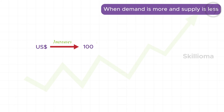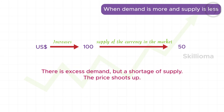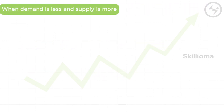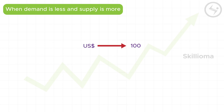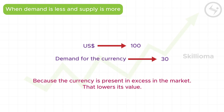With excess demand but a shortage of supply, the price shoots up. Number three — when demand is less and supply is more: if the supply of the US dollar is 100 but demand is only 30, the currency is present in excess in the market — that lowers its value. Now that we know why currencies are higher and lower in power, let's talk about the exchange factor.